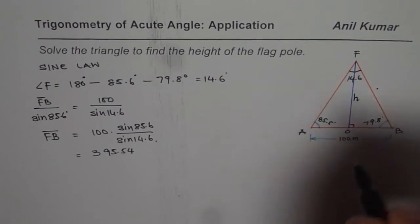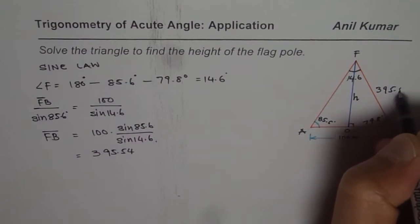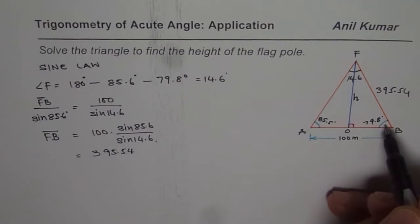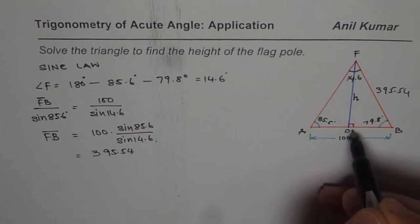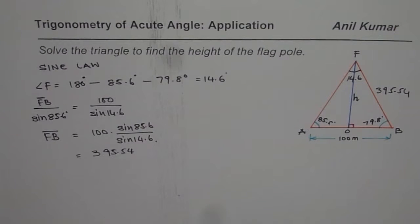So that is the value of F B for us, 395.54. Since we know F B, we can find height using the angle and the right triangle here. Height and the side are related with sine, correct?